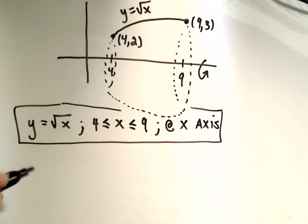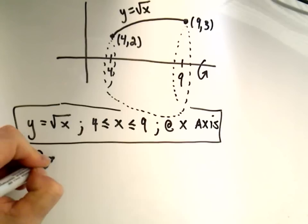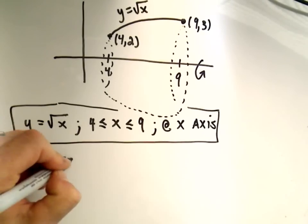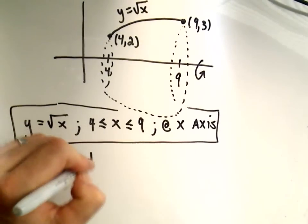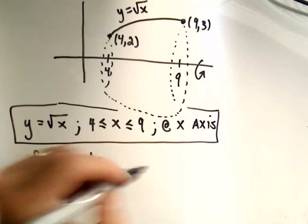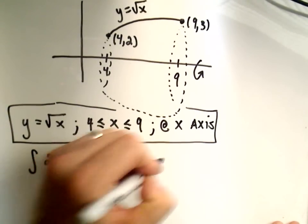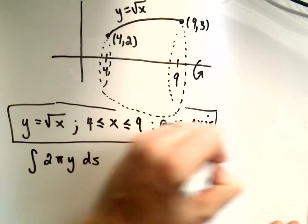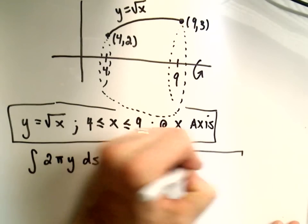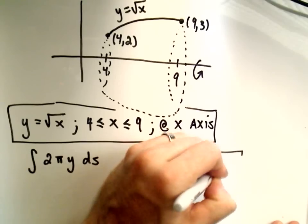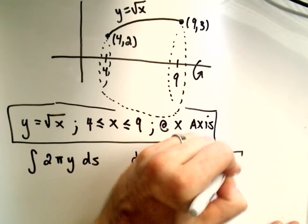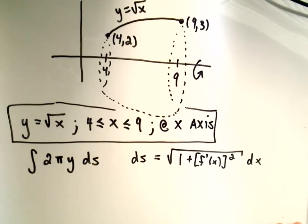Okay, so again, we have to use the formula 2πy ds. Now again, we have a choice here as to the ds formula we're going to use. I'm going to first use the 1 plus f'(x) squared dx formula, and we'll calculate it that way first.